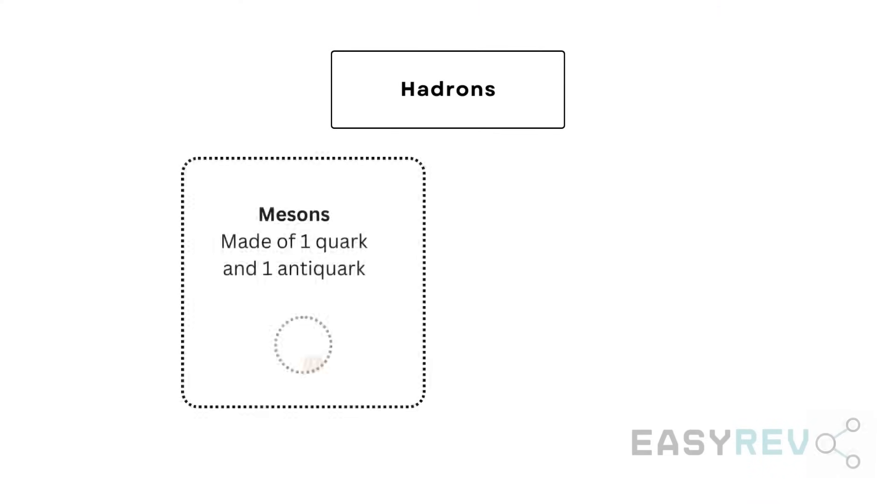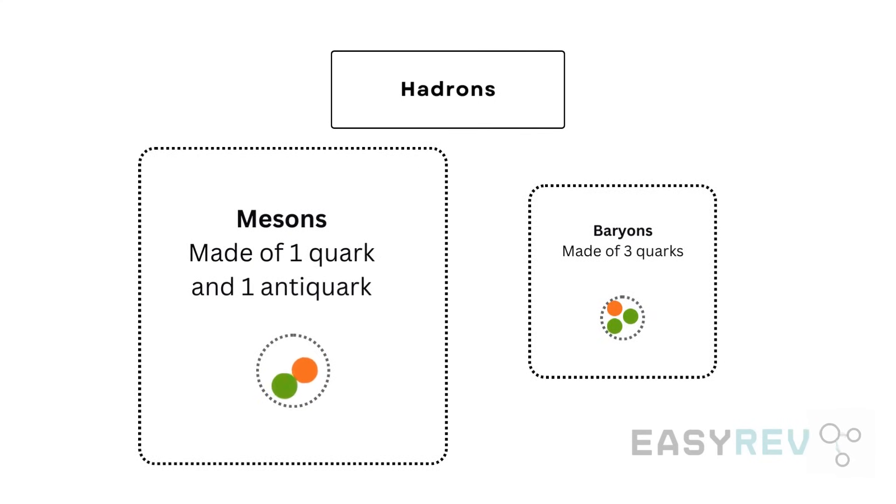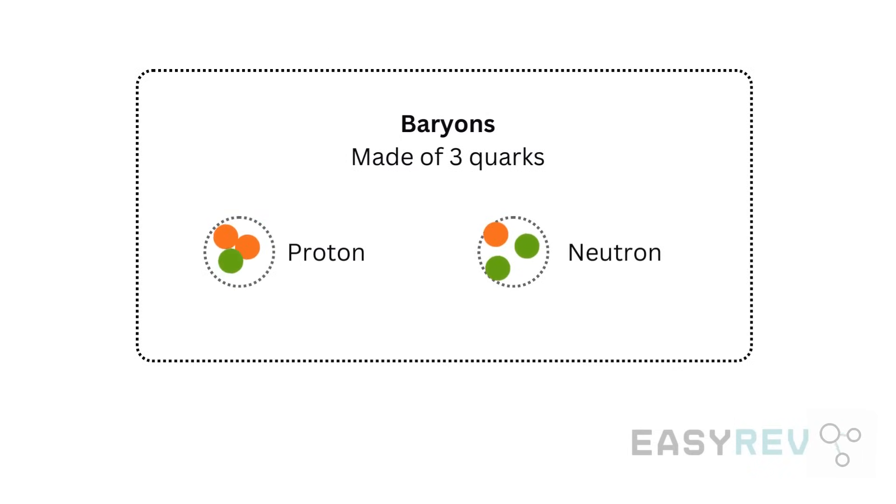All mesons are made up of exactly one quark and one antiquark. And on the other hand, baryons are all made up of three quarks exactly. And it is within this family of baryons that we find protons and neutrons residing.